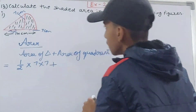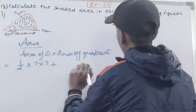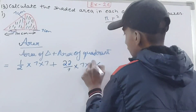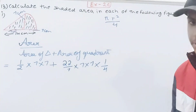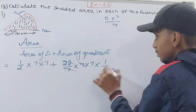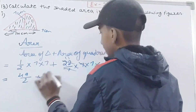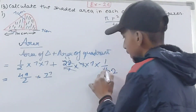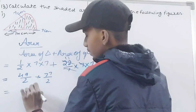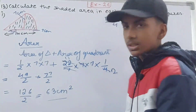Area of triangle = half × base × height = half × 7 × 7. Plus area of quadrant = π r² / 4 = (22/7) × 7 × 7 × (1/4). The sevens cancel with the 22 giving 11, and dividing by 4 gives 49/2. So we get 49/2 + 77/2 = 126/2 = 63 square centimeters. That's the answer for part one.